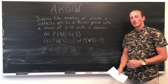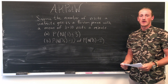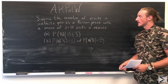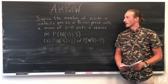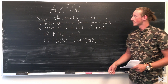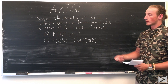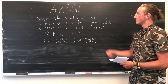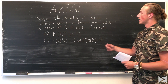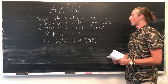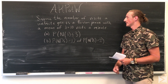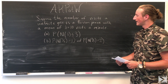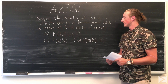Welcome to the World Wide Center of Mathematics. Today on our series, Advanced Knowledge Problem of the Week, we're looking at a stochastic processes problem where we suppose the number of visits a website gets is a Poisson process with a mean of 10 visits a minute.